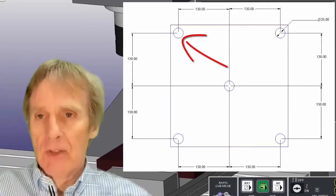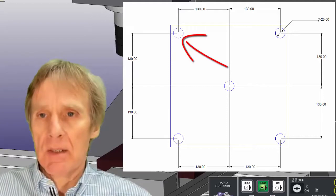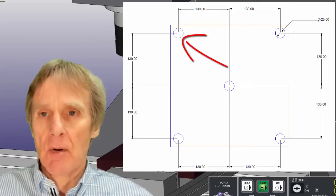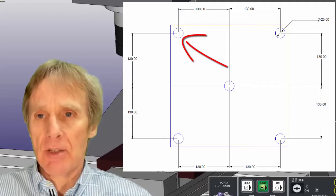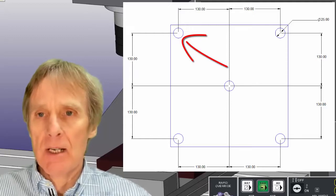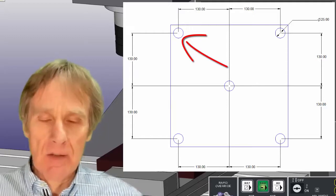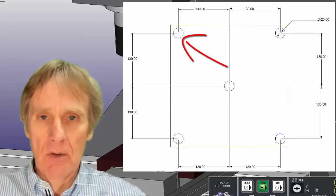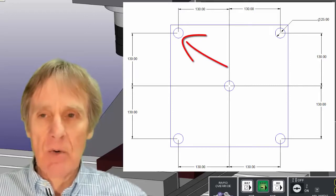The other thing worth noting at this point is that when we're looking at the directions that we're moving in the plus and the minus directions, what we always have to imagine is that the tool is moving, not the workpiece. And that's how we know which direction we're going in.